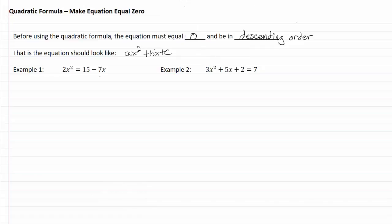Now remember that our quadratic formula looks like x equals negative b plus or minus the square root of b squared minus 4ac all over 2a.